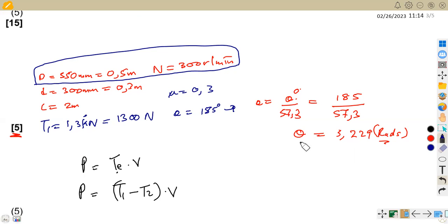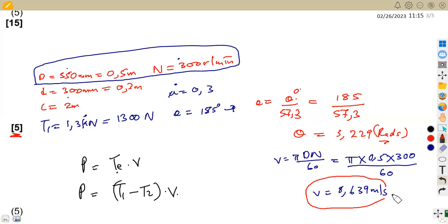So you can use direct on the formula or you can calculate aside. So as for me, I'm just going to calculate aside. So like I said, V, we can calculate it from pi dn over 60. So that is pi times, when we have full information, the bigger diameter and its speed. So you can use this because this smaller one we do not have the corresponding speed. So this is the bigger diameter, 0.5 times the speed in revs per minute, 300 over 60. So our V is going to be 8.639 meters per second.